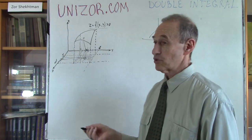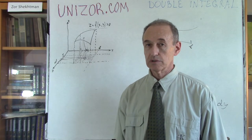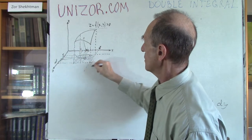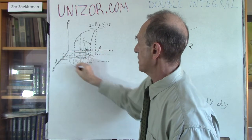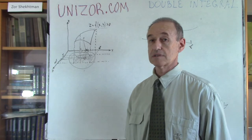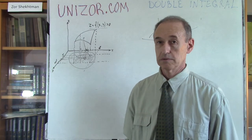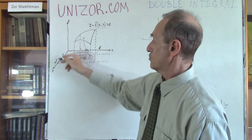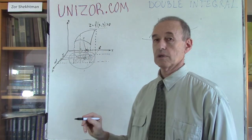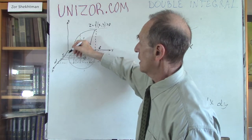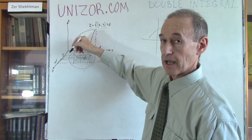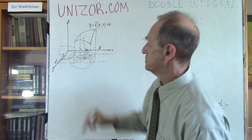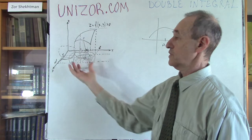A function of two arguments can be defined on a rectangular domain, with x from a to b and y from c to d. However, you can consider a function defined on a much more complex area — maybe a circle. A sphere centered at the origin, for example, is defined on all those x and y values within a circle, because that's how a sphere is defined.